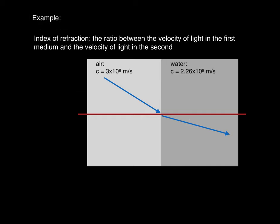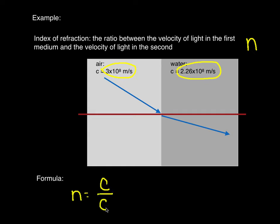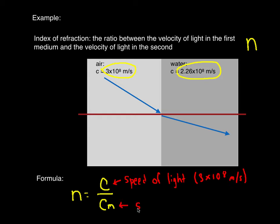The index of refraction is given by the letter N in formulas. It is the ratio between the velocity of the light in the first medium and the velocity of the light in the second medium. The formula used to calculate the index of refraction is N equals C over Cm, where C is the normal speed of light — the accepted 3 times 10 to the 8 meters per second — and Cm is the speed of light in the medium.